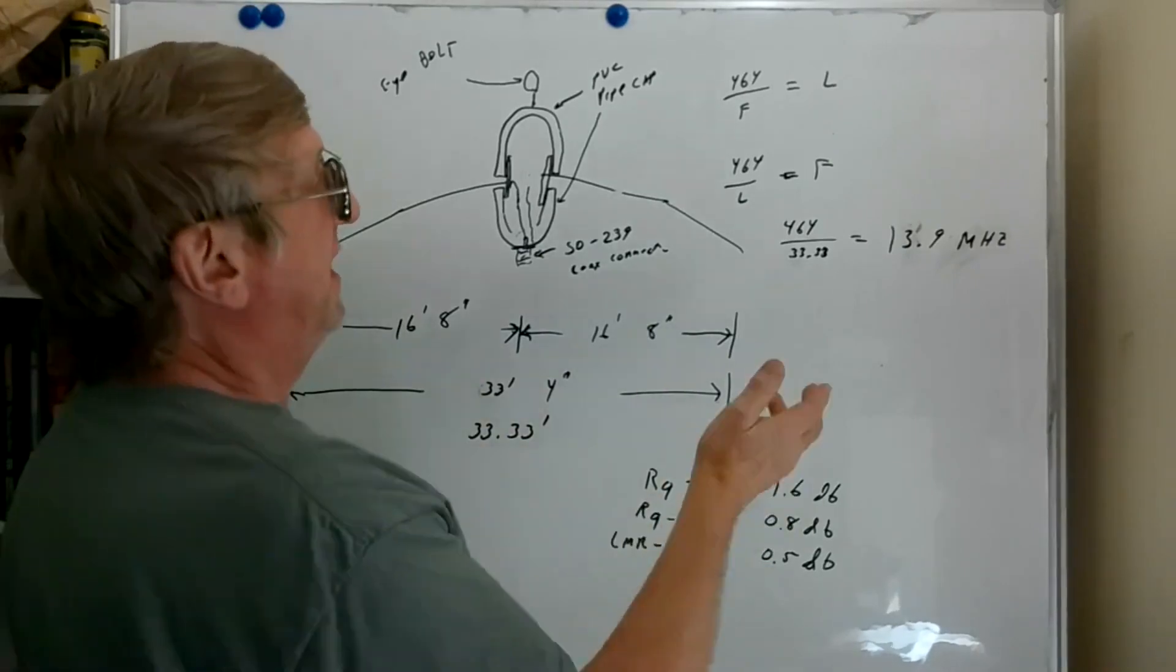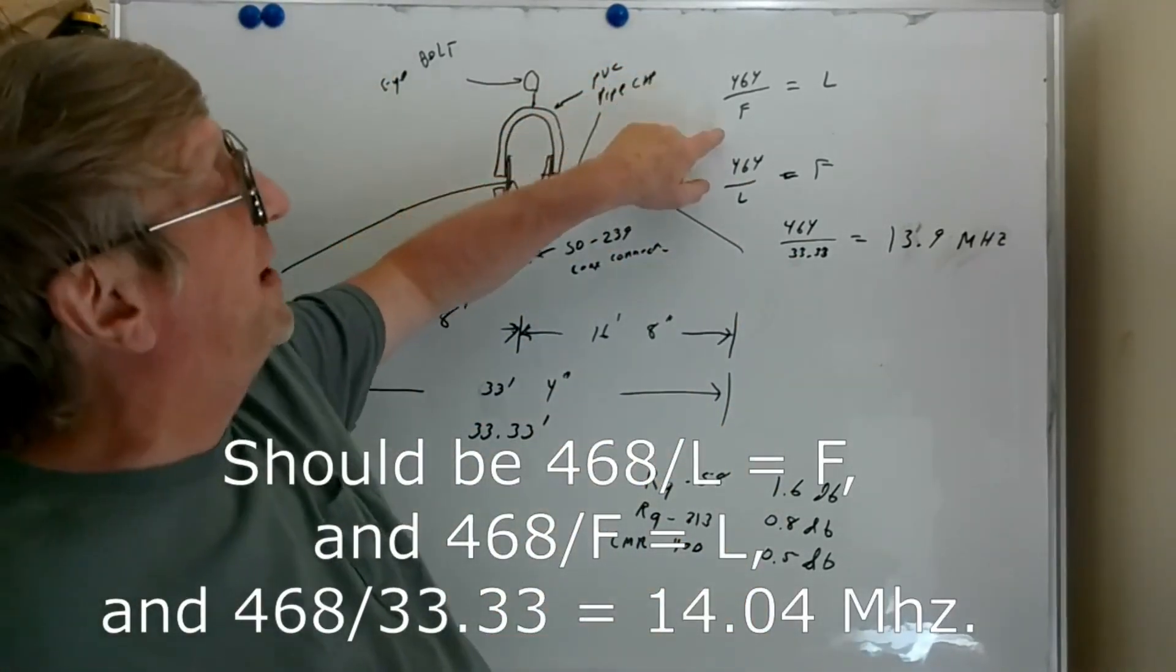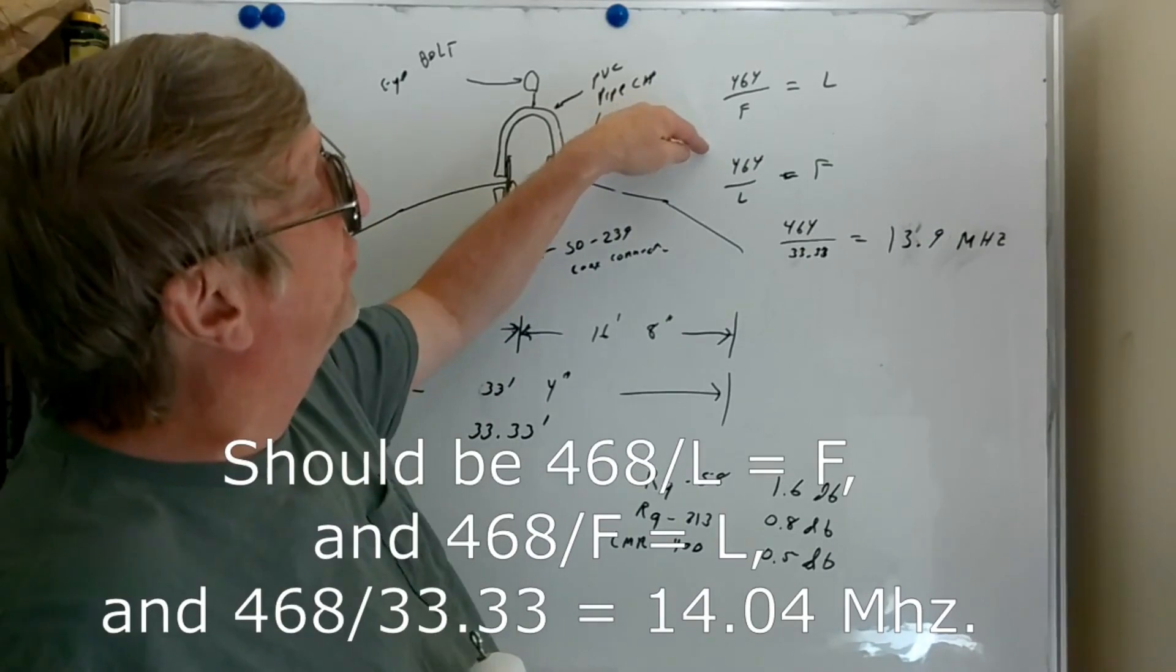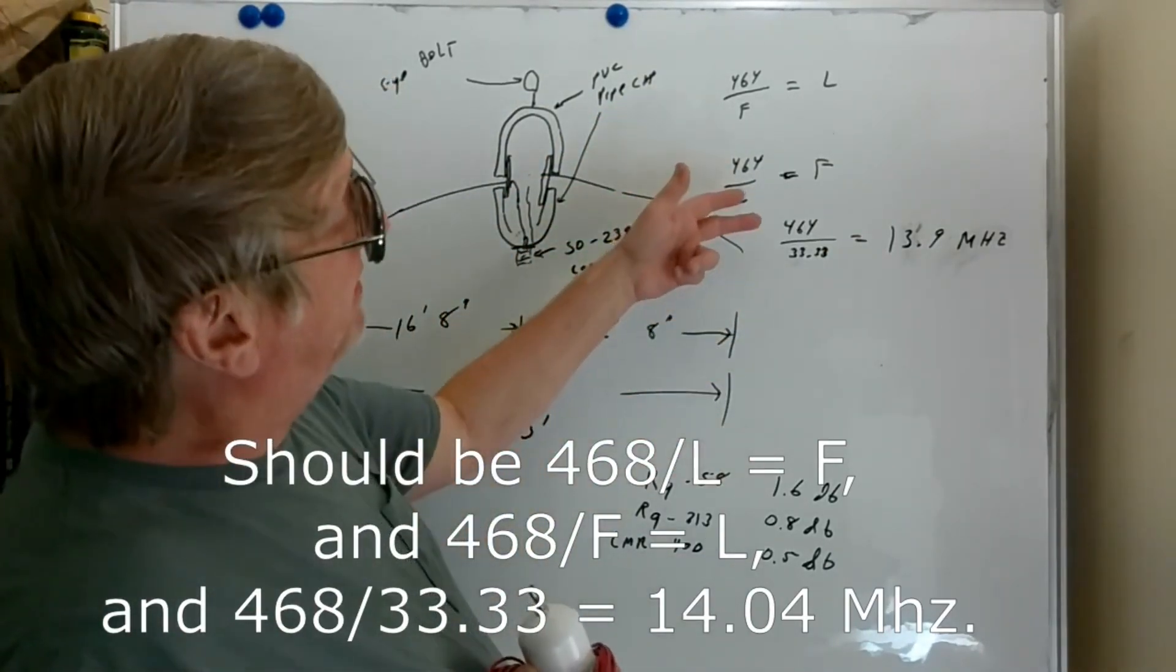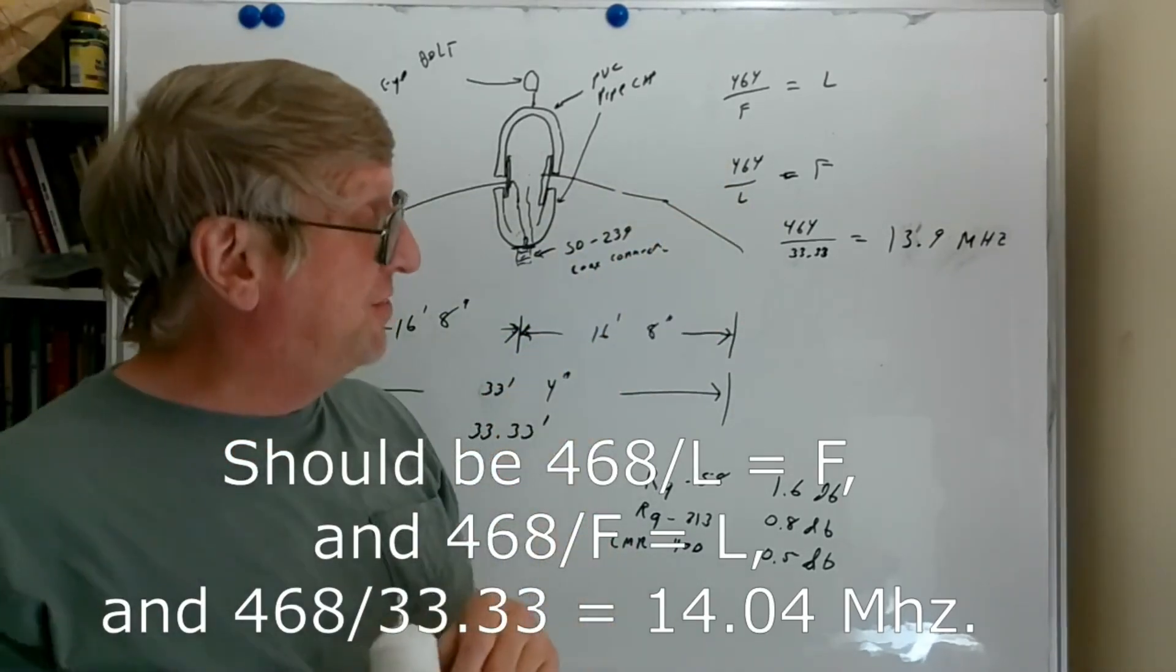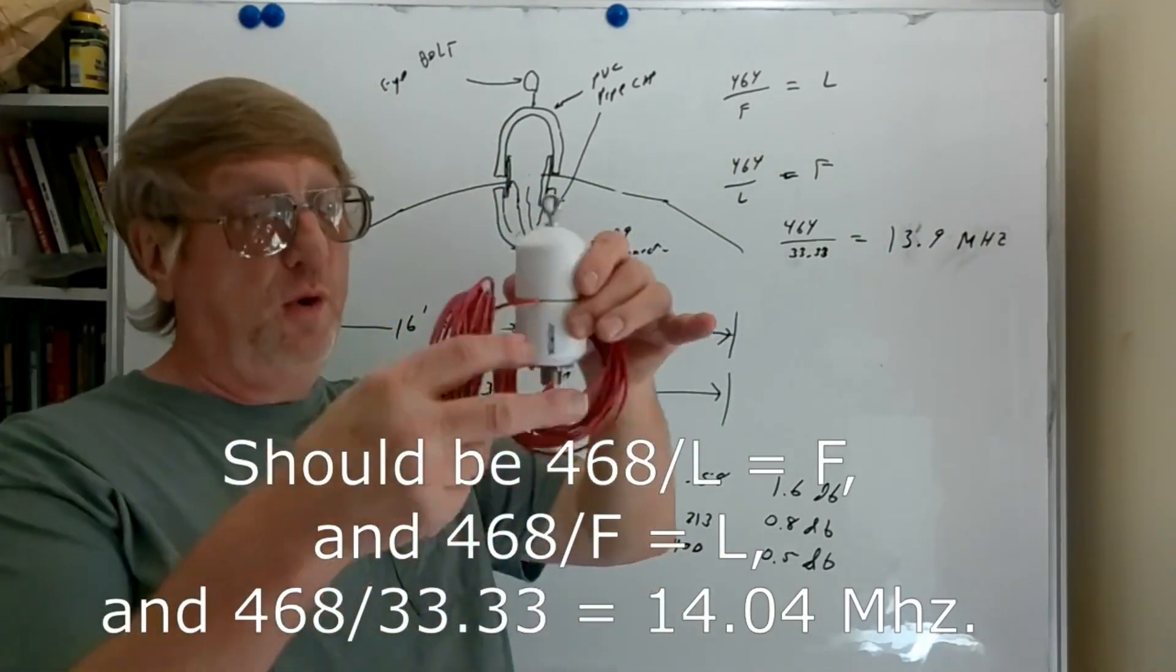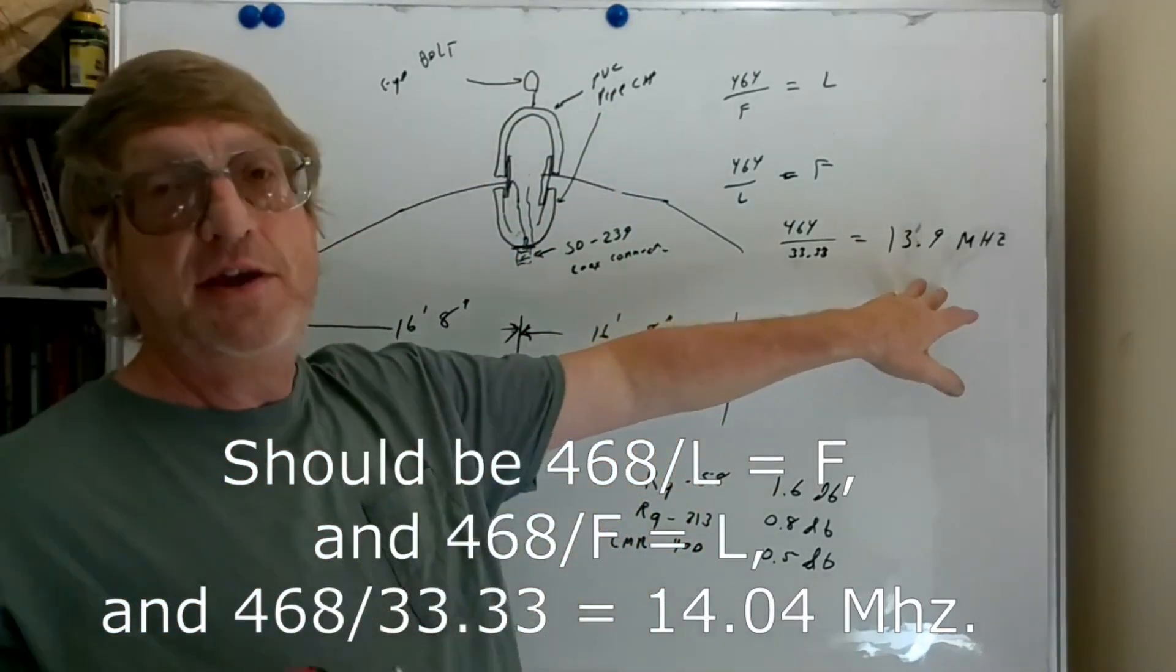If I double that, 33 feet 4 inches, convert it to a decimal, then I take my formula - you've seen this, 468 divided by frequency gives you your length in feet. I modified and transposed the formula, so I got 468 divided by length will give me the frequency. Basically, when I take 468 and divide by 33.33, I come with an approximate resonant frequency.